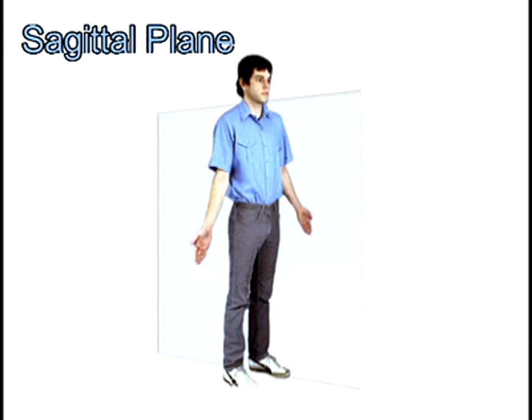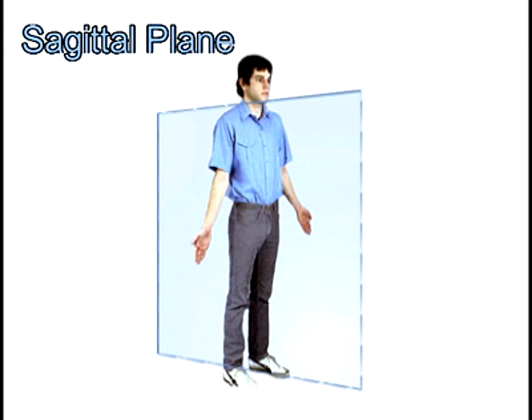There are three anatomical or cardinal planes in the anatomical position. The sagittal plane divides the body into two sides: left and right. With a few exceptions, motions of flexion and extension occur in the sagittal plane.